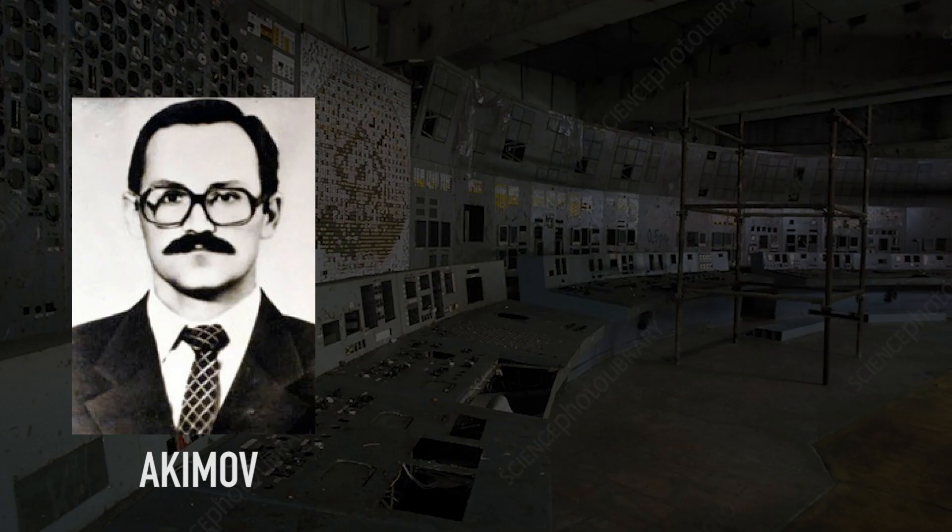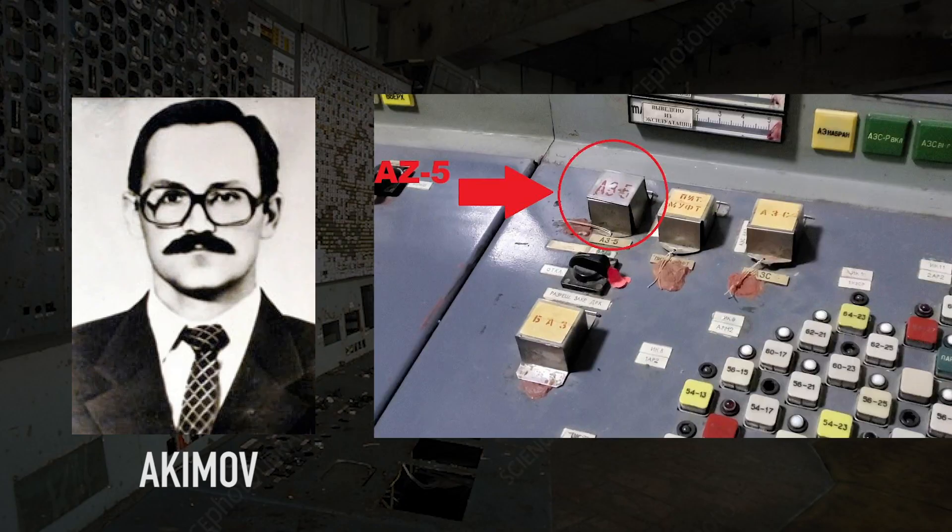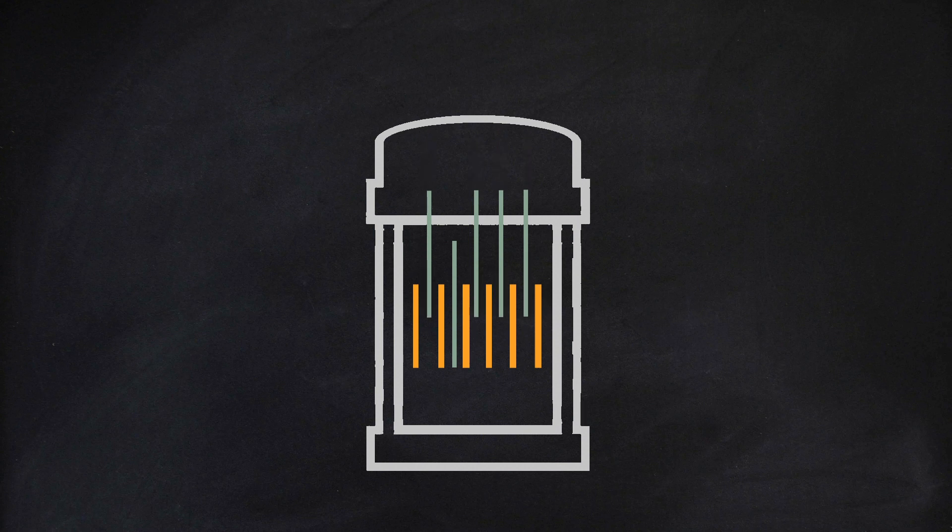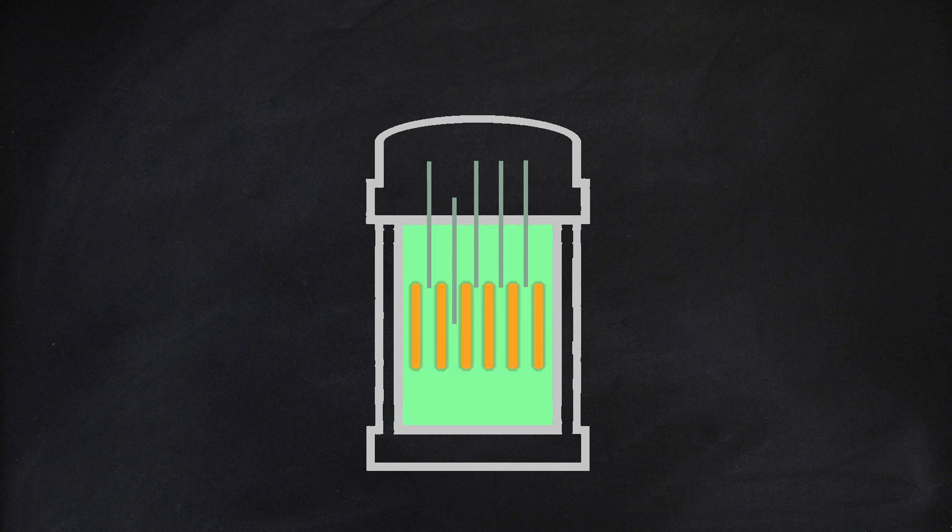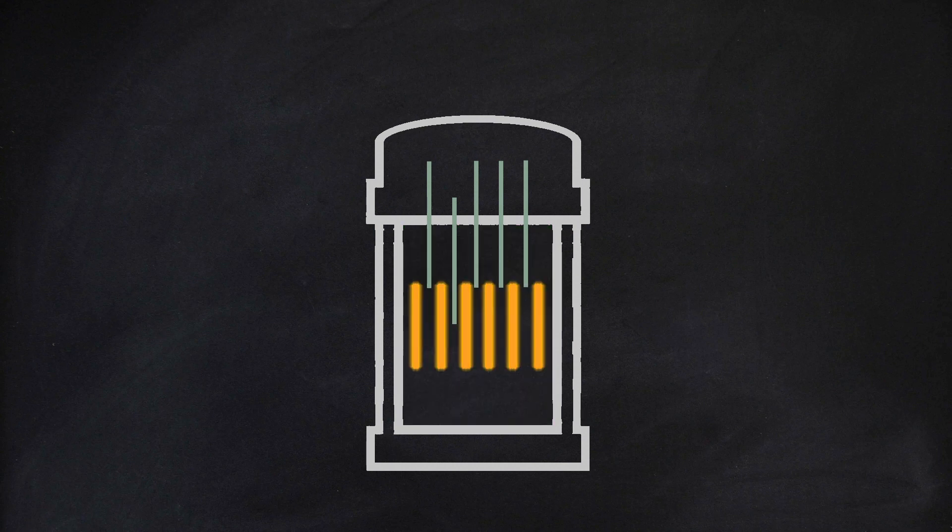Akimov pushes the emergency shutoff button AZ-5, which lowers all the control rods back into the reactor. In theory, this sounds like a great idea, as it should seriously slow down the chain reaction. Except it has a design flaw. As the rods are inserted, they displace the neutron absorbing water below them. Additionally, the tips of the rods are made of graphite, which actually increases the nuclear reaction speed. To make matters worse, the neutron absorbing xenon gas, which had been suppressing the nuclear reaction, has been rapidly burning off as power in the reactor increases.